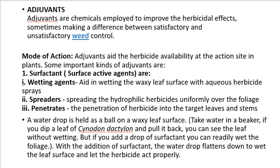Some important kinds of adjuvants are: first, surfactants — surface active agents. In surfactants, the first is wetting agents, which aid in wetting the leafy surface with aqueous herbicide spray. Second are spreaders, which spread the hydrophilic herbicide uniformly over the foliage. Third are penetrants, which aid the penetration of herbicides into the target leaves and stems.